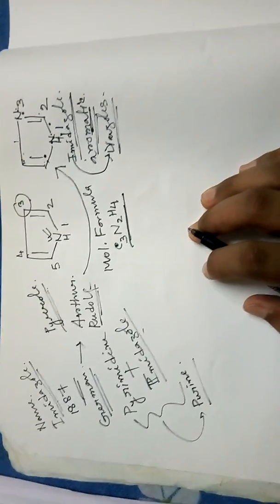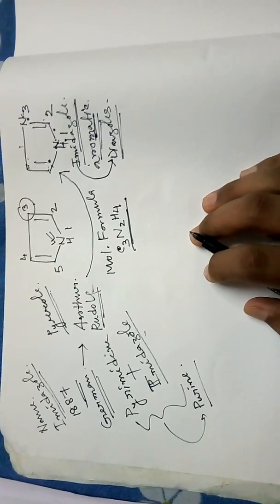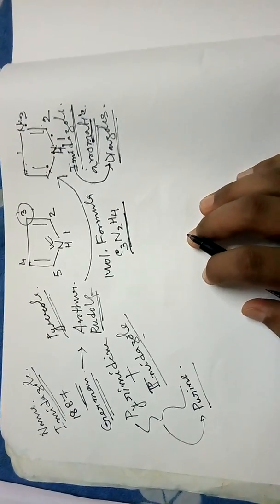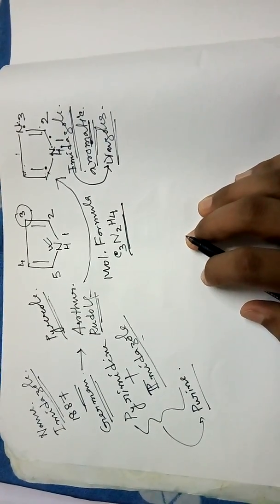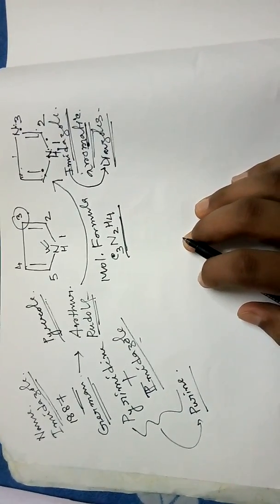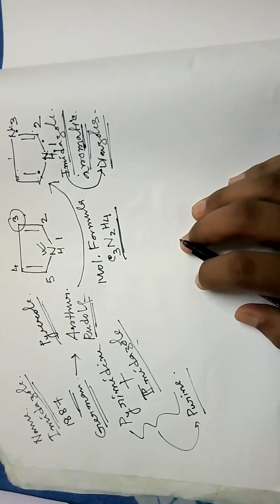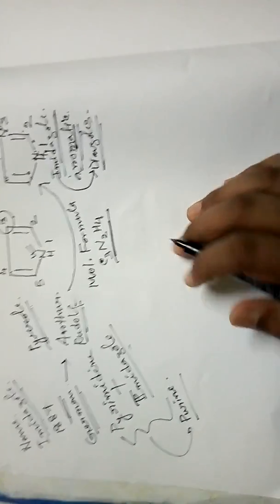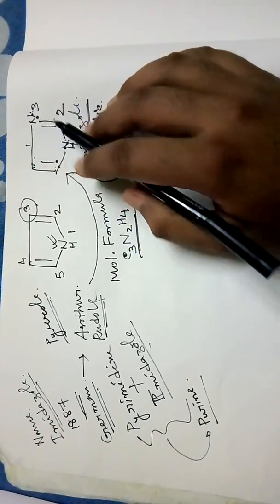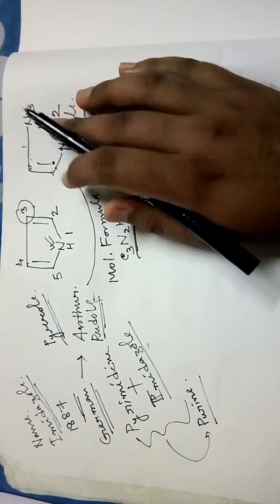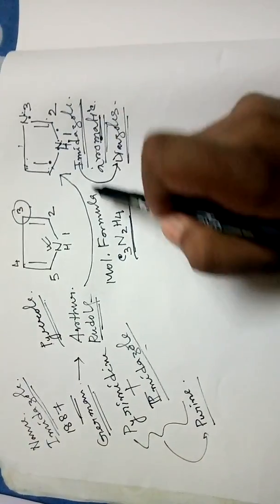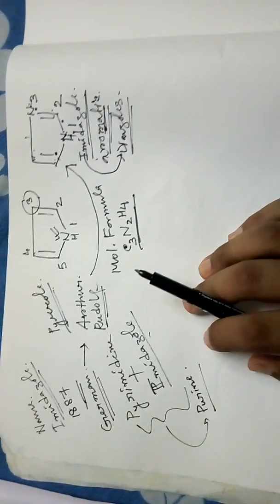Regarding tautomerism: imidazole is a planar five-membered ring and it exists in two equivalent tautomeric forms. Two equivalent tautomeric forms are possible for imidazole.